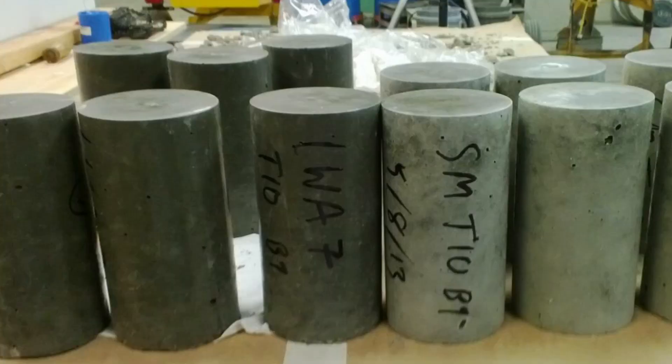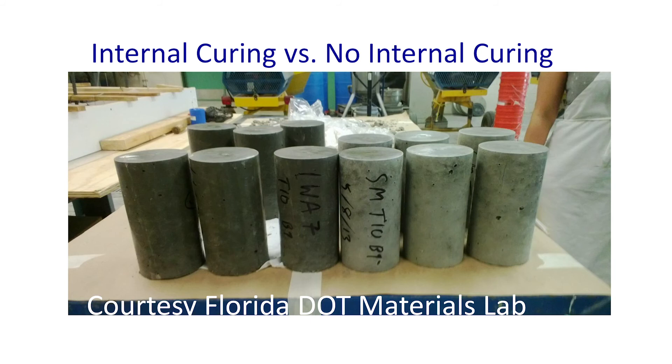It's still concrete, there's nothing magic about it. This picture is here just to give you an idea of the effect of internal curing. These cylinders were at the Florida DOT lab, made at the same time, the cylinder molds were stripped at the same time, and the lab technician was just taken by the difference in appearance of the internally cured cylinders compared to the conventional cylinders — it shows that internal moisture is staying in there.